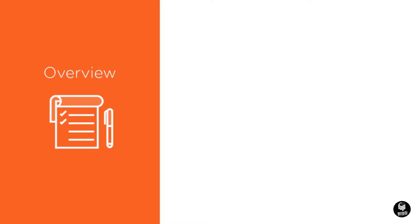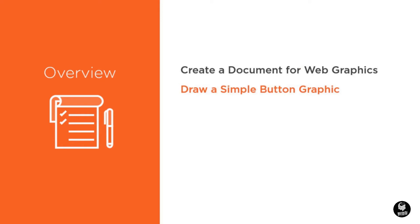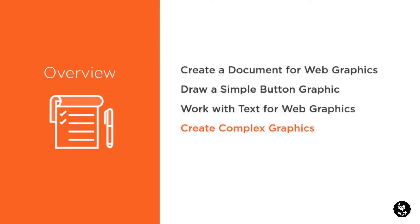But for now, we're going to focus on creating a document for designing individual web graphics. Then we'll create our first and perhaps the most common web graphic — a button. We'll also take a look at setting text within Illustrator by adding a label to our button and create a stand-alone text graphic. I'll show you how to create more complex graphics using tools exclusive to Illustrator that will make the whole process much easier. And finally, we'll wrap up this module by exporting all of the graphics we create in various formats for delivery to our web developer.